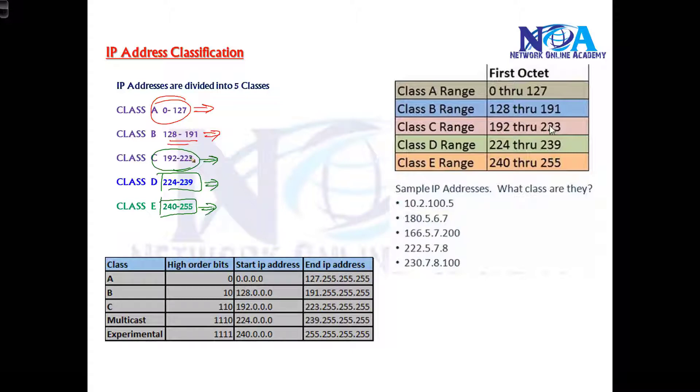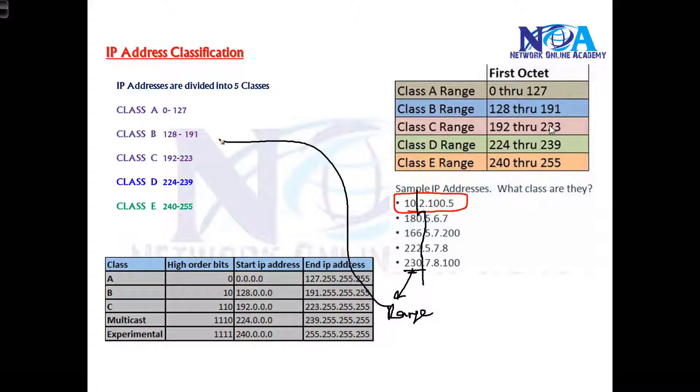Remember, this classification is based on the first portion, not based on the second, third, or fourth portions. Like here, I got some examples. So sample IP addresses I have given here. Now our job is to identify which class they belong to. So if you see this address, the classes are divided only based on the first portion. Remember this. This can be any number in this range, whatever is given here. So you have to see the first portion.